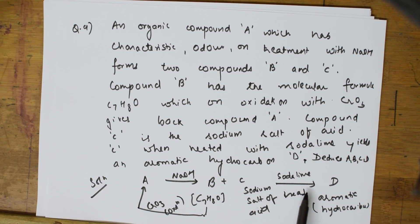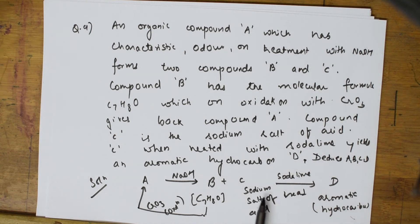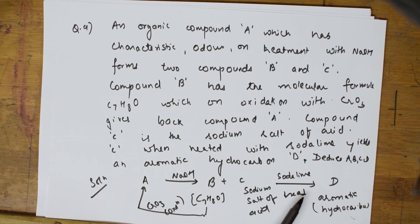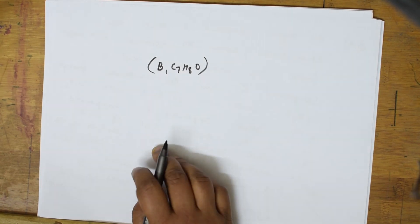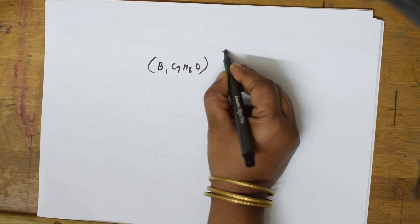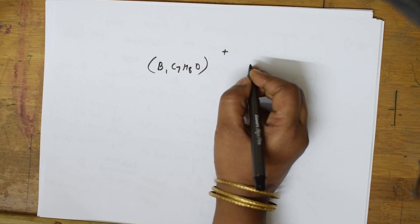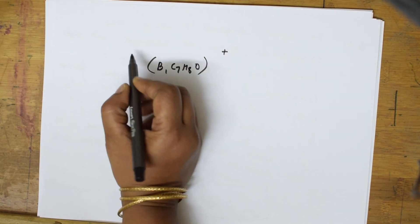In Cannizzaro's reaction one product is the sodium salt of carboxylic acid and the other is an alcohol. C is the sodium salt of a carboxylic acid, so B must be the alcohol. Compound B has formula C7H8O — C6H5 accounts for six carbons, one from CH2OH gives seven, and eight hydrogens matches, so B is benzyl alcohol C6H5CH2OH.